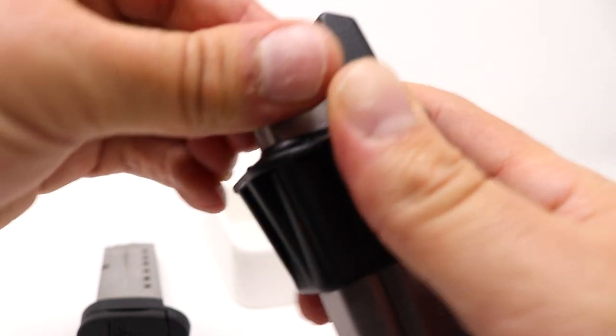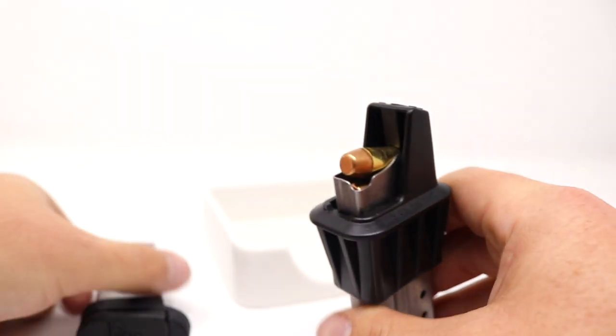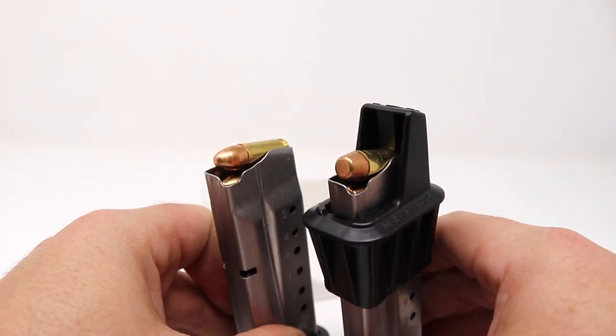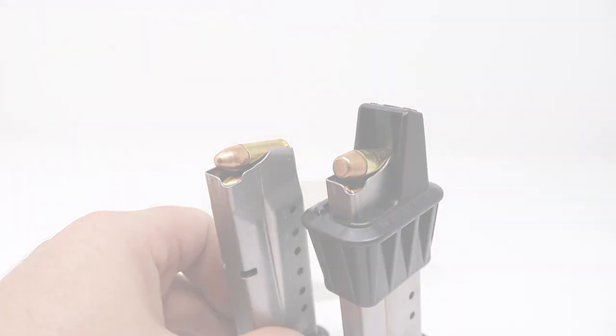And again, we can unload it with the unloader in the back when we're done if we want to. And we're done. So that is the Makershot speed loader for the Shield and Shield 2.0 in 9mm and 40 Smith & Wesson only. Available now.